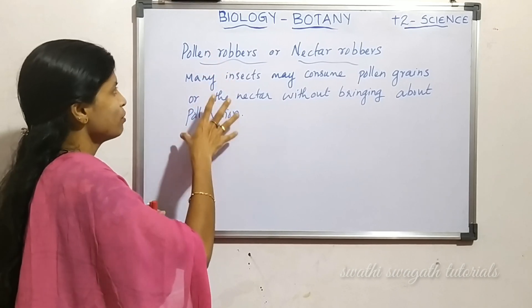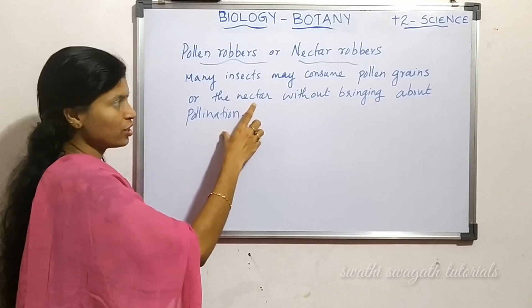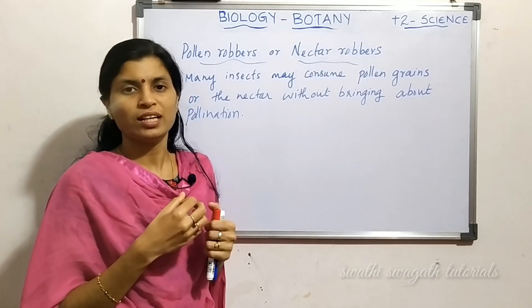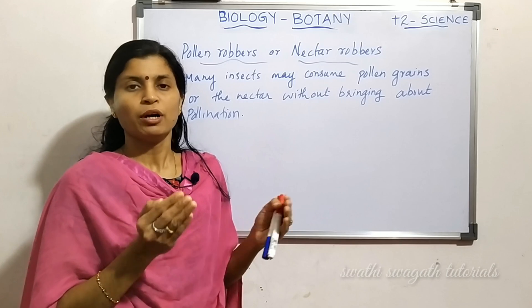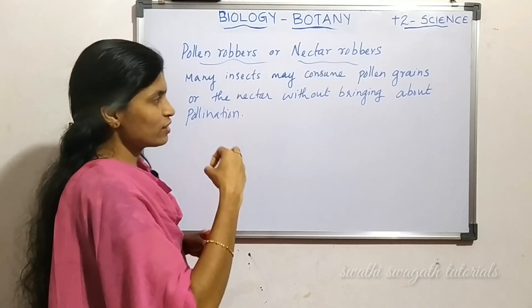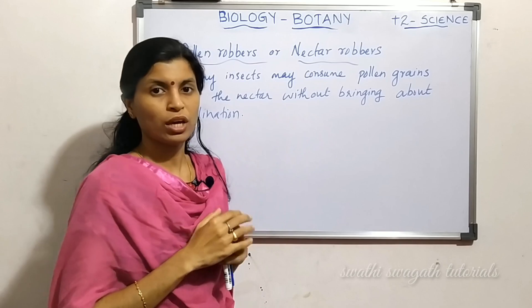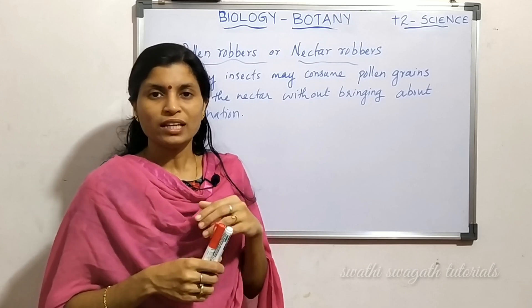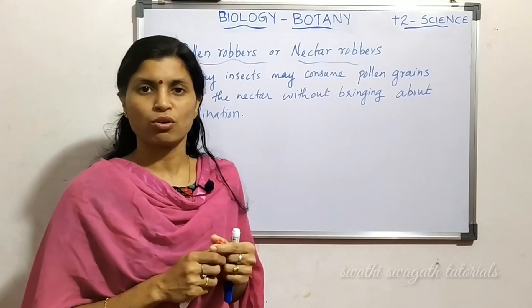The next topic is pollen robbers or nectar robbers. Many insects may consume pollen grains or nectar without bringing about pollination. Normally, floral flowers offer some kind of rewards to pollinating agents. But in the case of pollen robbers, insects come and consume pollen grains or nectar without helping in pollination. Such animal visitors are called pollen robbers or nectar robbers.